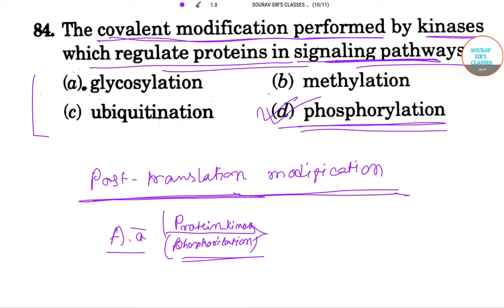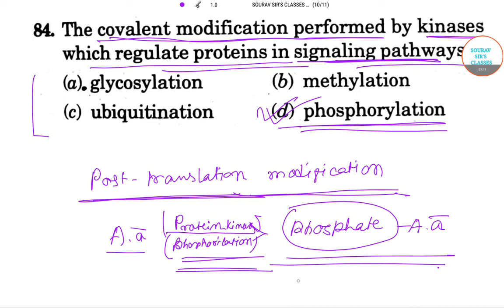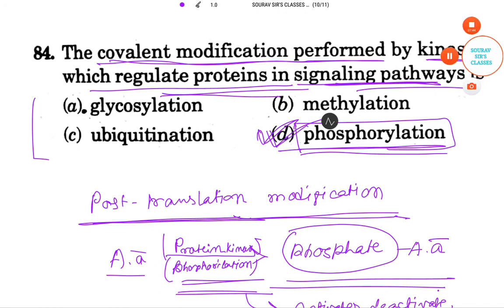The amino acid is phosphorylated by the protein kinase through the addition of a phosphate group to the amino acid. This phosphorylation activates, deactivates, or mainly modifies the protein. So the answer is phosphorylation — option D is correct for this question. Thank you for watching this video.